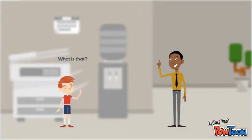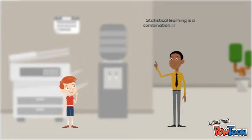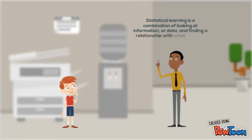Have you heard of statistical learning? What is that? Statistical learning is a combination of looking at information or data and finding a relationship with what we have or looking into the future to make a prediction.